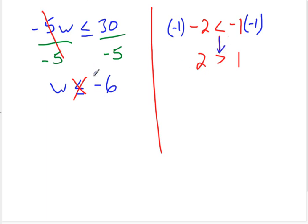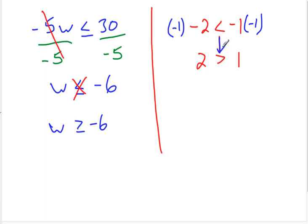We can see how that works here: w is greater than or equal to negative 6. Let's pick a number greater than negative 6, like 0. Negative 5 times 0 is 0, and that is less than or equal to 30 — correct. So make sure when you're multiplying or dividing by a negative number, you must switch the direction of the sign.